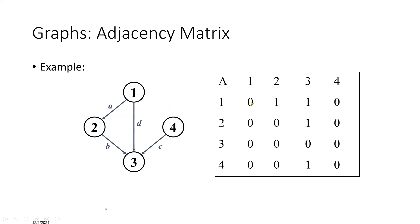Now let's fill in the first row. We start at vertex 1. There is no loop from 1 back to 1, so that is 0. Moving to column 2: there is an edge from 1 to 2, so we write 1. Column 3: there is an edge from 1 to 3, so we write 1. Column 4: there is no edge from 1 to 4, so that is 0. The first row is therefore [0, 1, 1, 0].